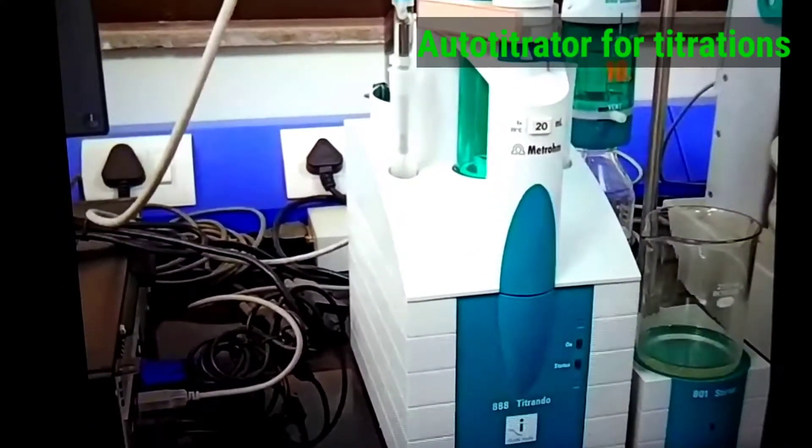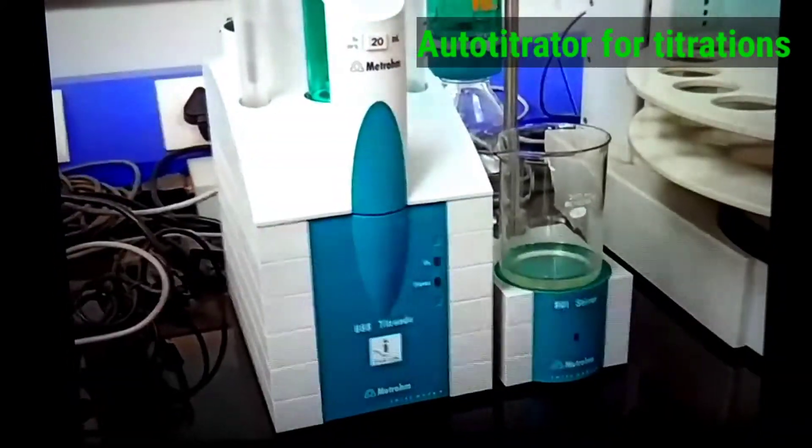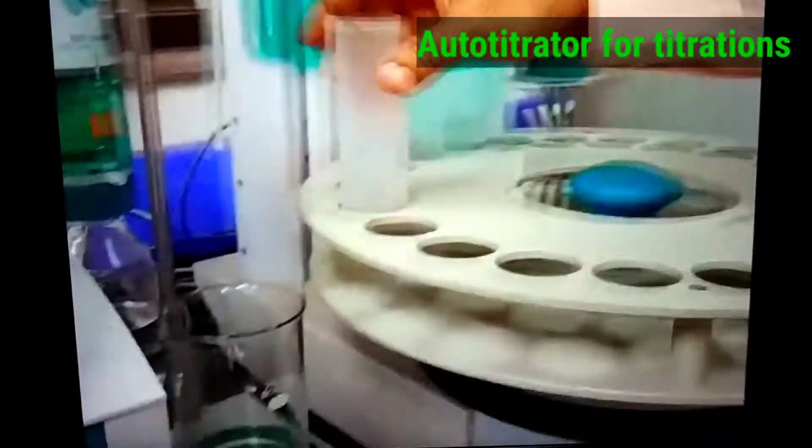So you are taking this sulfuric acid for doing the titration. So in this bottle, in this brown bottle we have acid, 0.02 normality. Then we are putting the sample in a tube here like this.